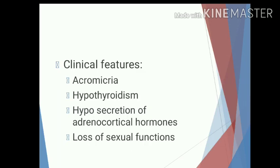Clinical features include atrophy of hands and feet. The person may also show symptoms of hypothyroidism with decreased secretion of TSH and thyroid hormone, symptoms of hyposecretion of adrenocortical hormones, and loss of sexual functions. This concludes the discussion on disorders of the pituitary gland.